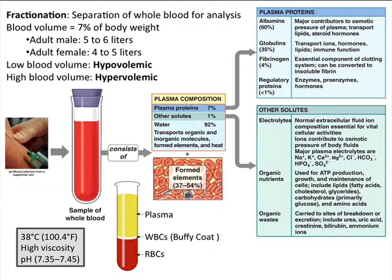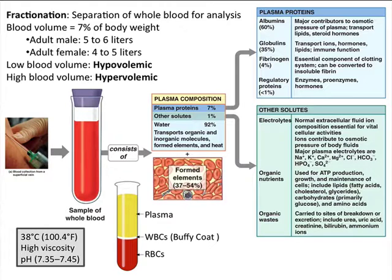When we take a blood sample by venipuncture, we collect it and fractionate it — separating whole blood into its constituent parts for analysis. Blood volume is only 7% of body weight: 5 to 6 liters in males and 4 to 5 liters in females. Since plasma is only 3 liters, a significant component of that volume is represented by formed elements — red blood cells, white blood cells, and other things. A person who is hypovolemic has a low blood volume; hypervolemia is a high blood volume.